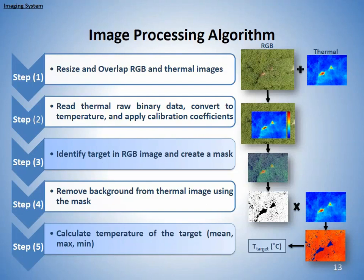The image processing algorithm resizes and overlaps the RGB and thermal images since they don't have the same resolution. It converts thermal raw binary data to temperature and applies calibration coefficients — thermal sensors like IRTs need calibration. The algorithm identifies the target in the RGB image. We tell the imager what target is of interest: is it canopy, fruit, leaves? It creates a mask and uses that mask to remove the background from the thermal image. At the end, it calculates the temperature of the target with some statistical analysis — giving us average, maximum, and mean.